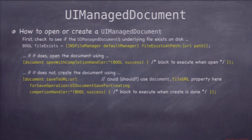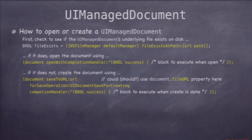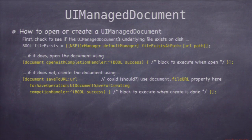The UIManagedDocument has only been alloc-inited — it doesn't exist on disk yet. We have to create it if it doesn't exist, and open it if it does. To find out whether it exists, we use NSFileManager's fileExistsAtPath method, which returns a Boolean. If the file exists, we open it with the UIManagedDocument method openWithCompletionHandler. If it doesn't exist, we create the document on disk with saveToURL forSaveOperation, using UIDocumentSaveForCreating as the argument.